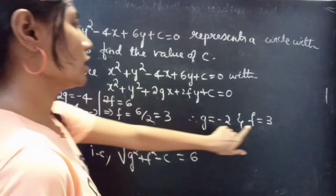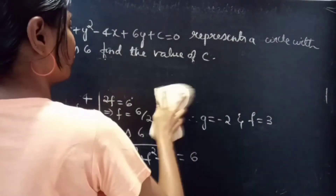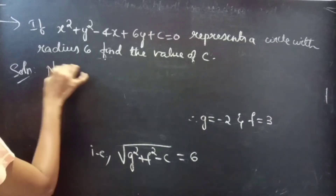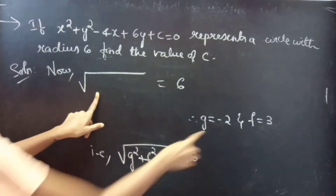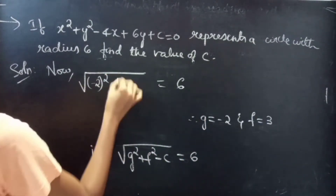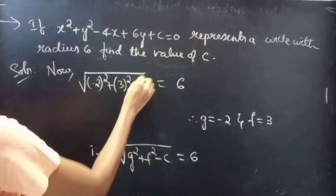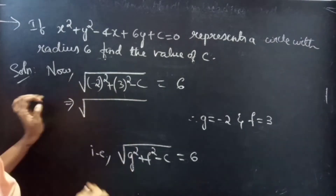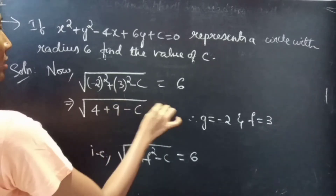Now we have the values of g and f. We can substitute these values in the radius condition. So √(g² + f²- c) = 6 becomes √((-2)² + 3² - c) = 6, which gives √(4 + 9 - c) = 6.